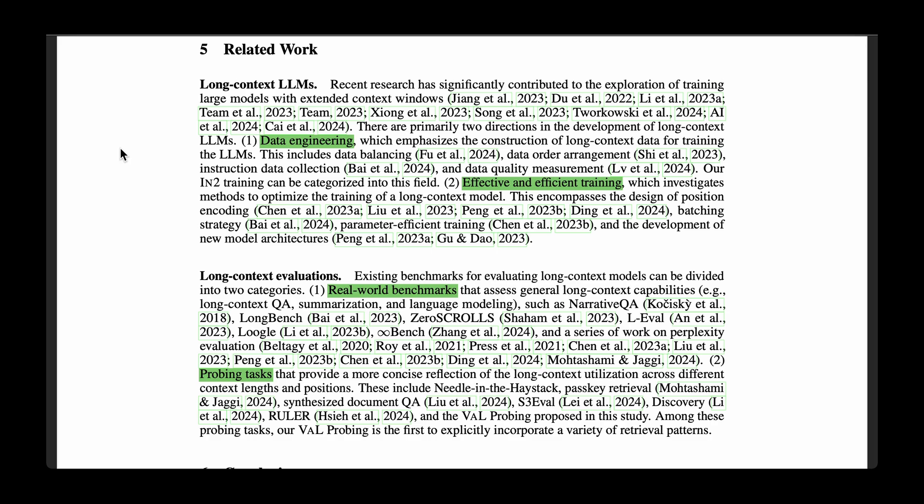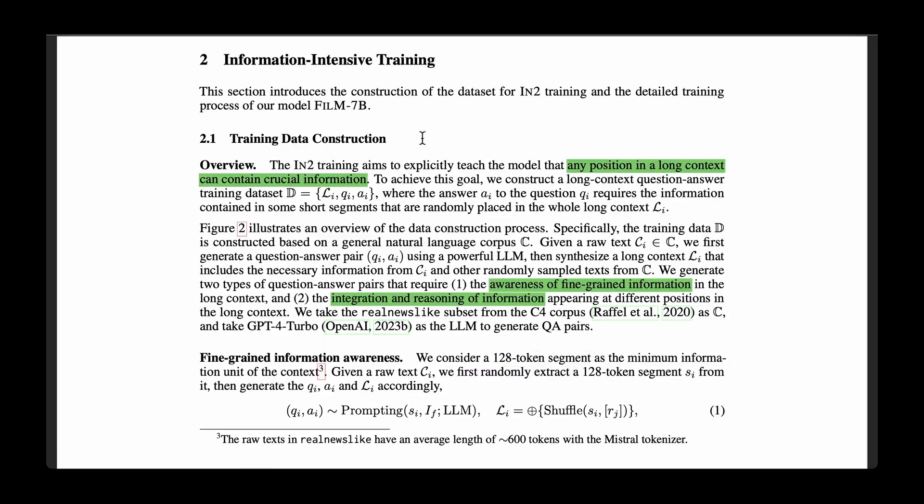If we look at the related work in long context LLMs, there are primarily two directions in the development of long context LLMs. One is data engineering, where the emphasis is to construct long context data for training the LLMs. And the other one is effective and efficient training, which investigates methods to optimize the training of long context models. So this proposed approach is more in the data engineering side, where they come up with a novel data collection technique.